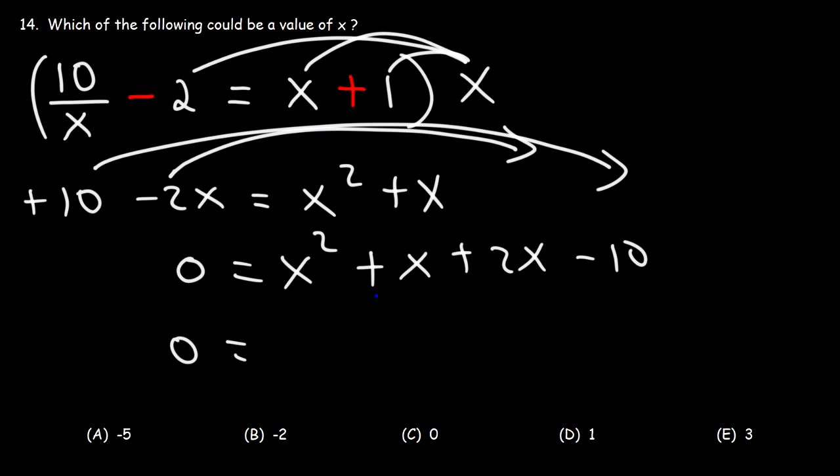Now let's go ahead and combine like terms. So we have x plus 2x, which is 3x. And thus we have x squared plus 3x minus 10.